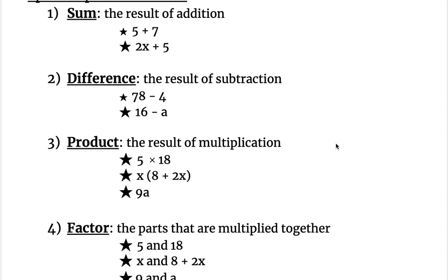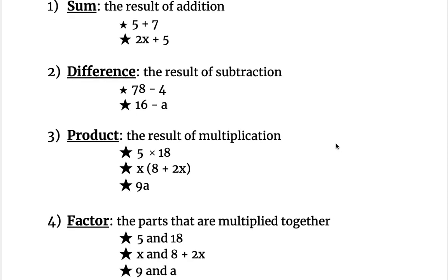So we have sum and that is the result of addition. So examples would be 5 plus 7, or 2x plus 5. Those are both sums. So this is the sum of 5 and 7 and this is the sum of 2x and 5.